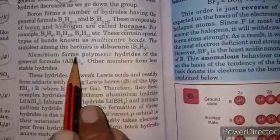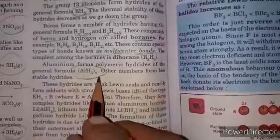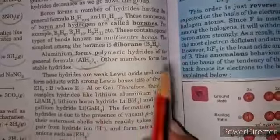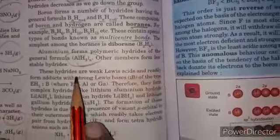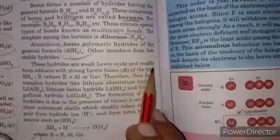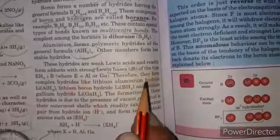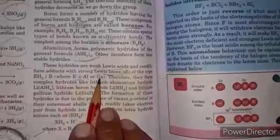Aluminum forms polymeric hydride (AlH3)n, but other members form less stable hydrides. These hydrides act as weak Lewis acids and readily form adducts with strong Lewis bases.